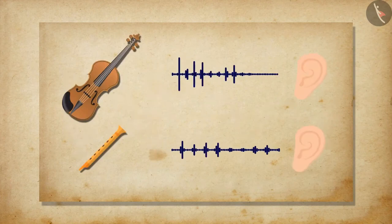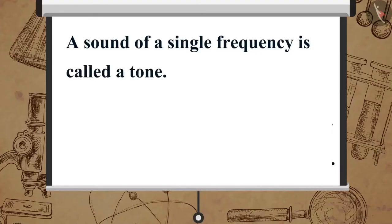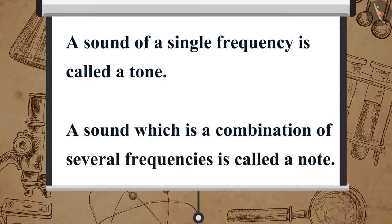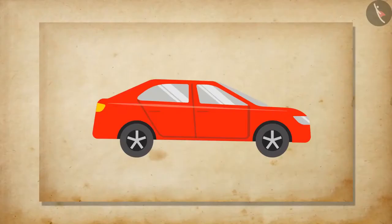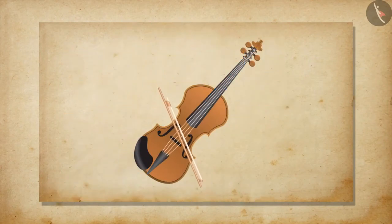The quality of a sound is the feature which helps us to differentiate between two sounds with the same pitch and loudness. A sound of a single frequency is called a tone, and a sound which is a combination of several frequencies is called a note, which is pleasant to our ears. Noise is the unpleasant sound which we hear, while music is pleasant and of a rich quality.